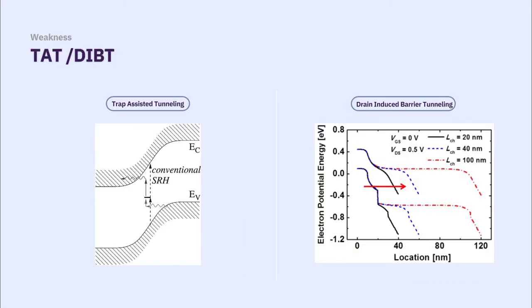However, there are some weaknesses. I can tell you two things. First is TAT, trap-assisted tunneling effect. And second is DIBT, drain-induced barrier tunneling.